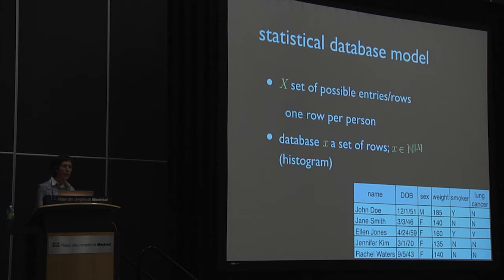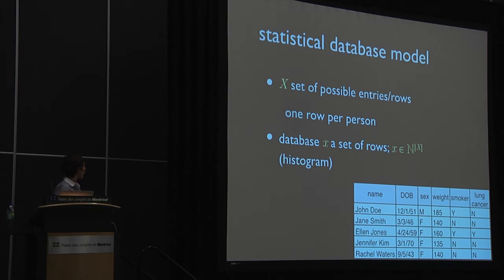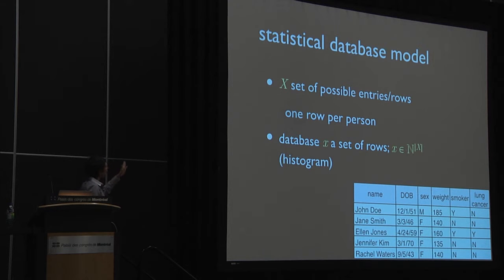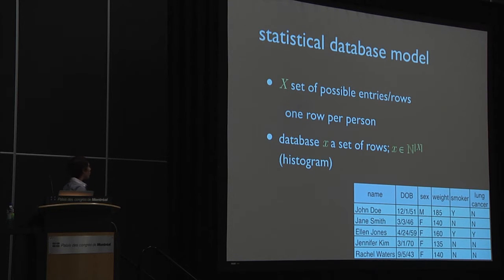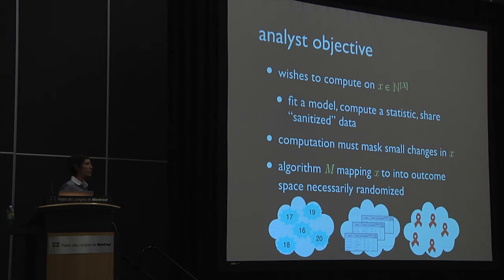We'll be working in a statistical database model where we write X — this big X — as the set of possible entries or rows of a database, thinking of each row as a single person's data. A database is represented as a histogram: this little x denotes how many instantiations of each possible entry are in my database. We the analysts show up and want to compute on such a database — fitting a model, computing a statistic, or sharing some sanitized version of the data.